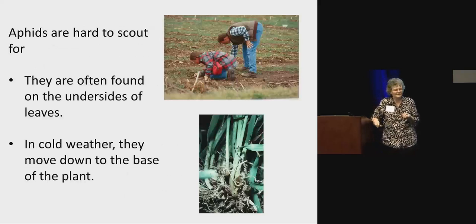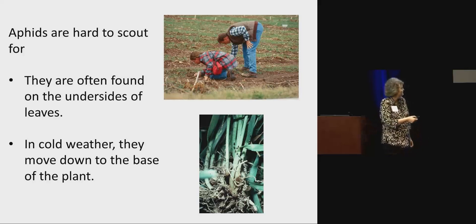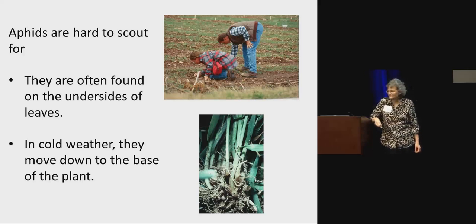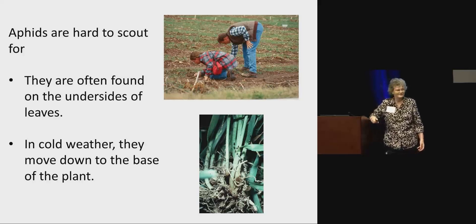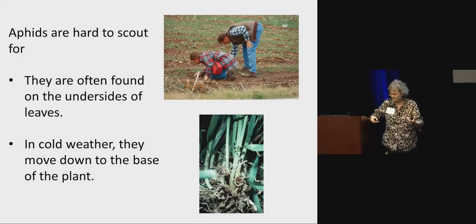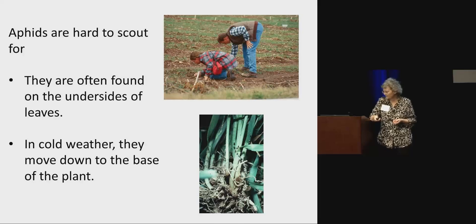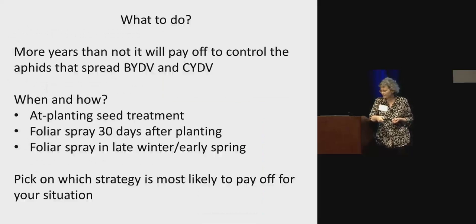We have a problem with aphids in that they are very hard to scout for. They're often on the undersides of the leaves, which are a long way down. The rice root aphids are very hard to find — a lot of times they're underground most of the time. When the weather's cold, even aphids that were up on the leaf tend to be down near the base of the plant too. It's very hard to scout for aphids accurately, so this isn't the kind of pest where I'd say scout and spray when you hit a threshold.